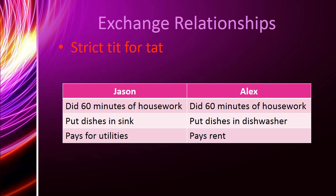For example, we have two people who live together, Jason and Alex. Jason does 60 minutes of housework and Alex does 60 minutes of housework. Jason puts the dishes in the sink, Alex puts the dishes in the dishwasher. Jason pays for utilities, Alex pays rent. These two people are being very careful that they're both doing the exact same amounts. That would be an exchange relationship — you're keeping track of how much each person is doing to make sure you're both equal.